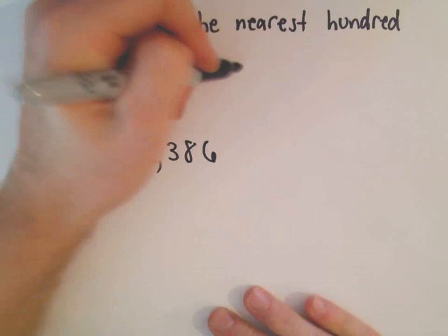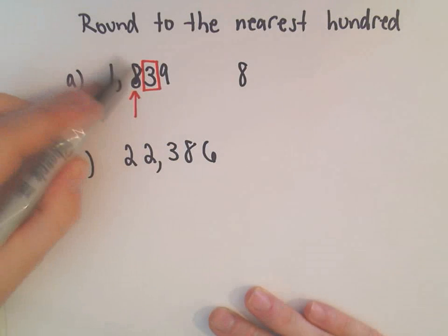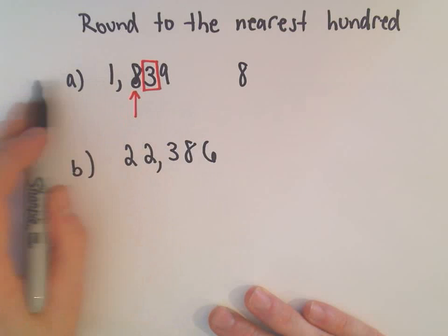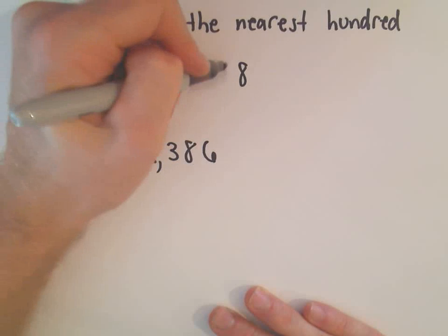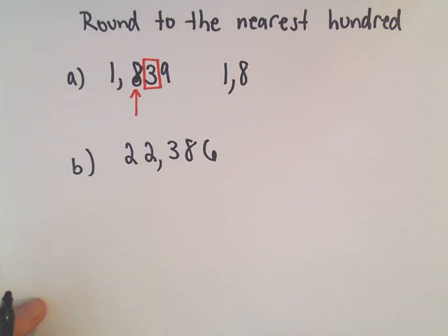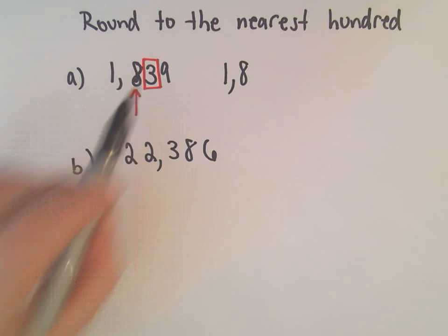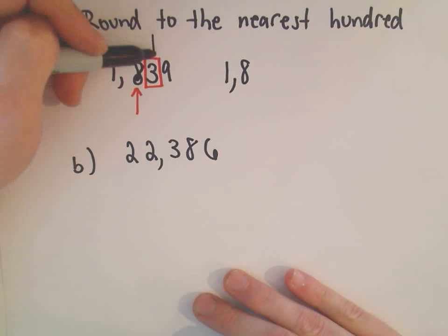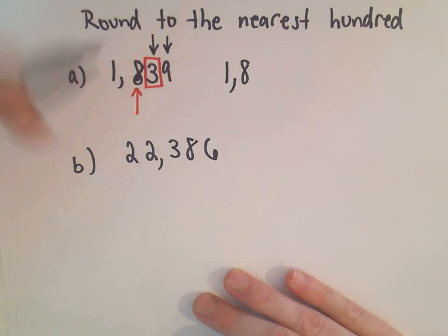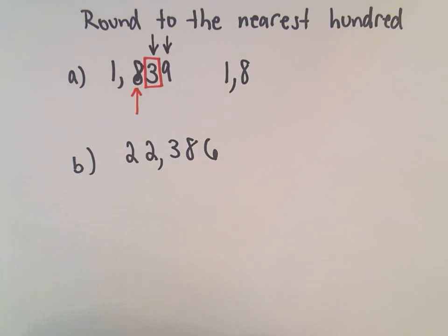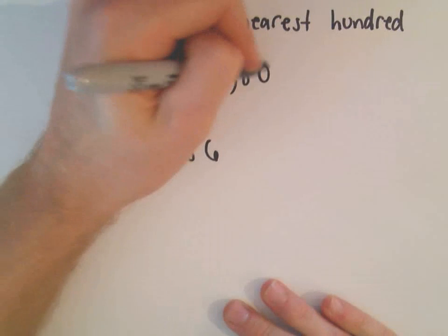Okay, so I'm going to leave the 8 alone. We also leave every digit prior to our rounding digit alone as well in this case. And now it says we make everything to the right of the digit that we're rounding to, we simply make all of those into zeros.